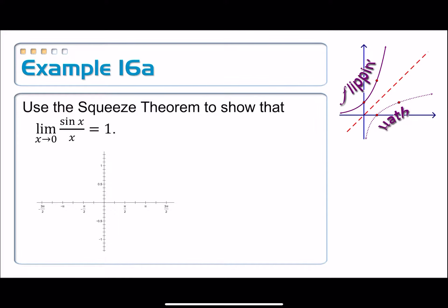On example 16, part A, use the squeeze theorem to show that the limit as x approaches 0 of sine x over x is equal to 1.